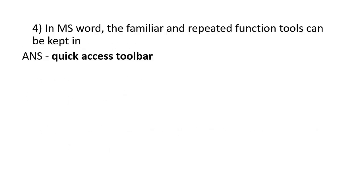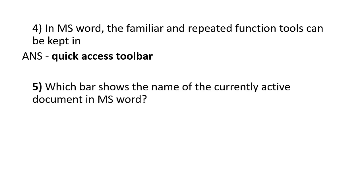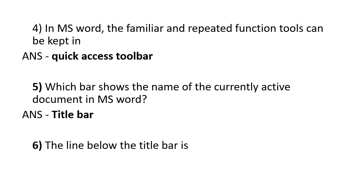In MS Word, the familiar and repeated function tools can be kept in the Quick Access Toolbar. Which bar shows the name of the currently active document in MS Word? The line below the title bar is a menu bar.